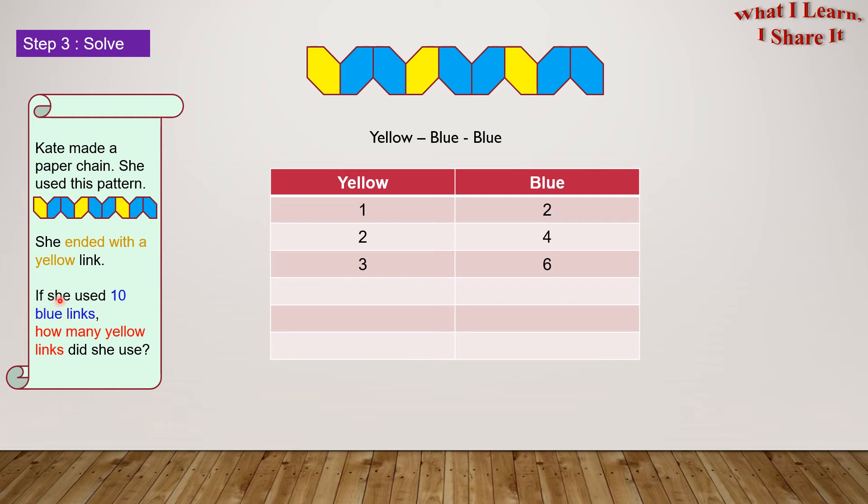If she used ten blue links, how many yellow links did she use? So we have to go from the blue up till ten. Let's continue the pattern now. So if there are four yellow links, there will be eight blue links. If there are five yellow links, how many blue links are there? Yes, there are ten blue links.